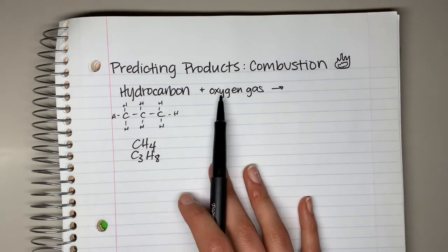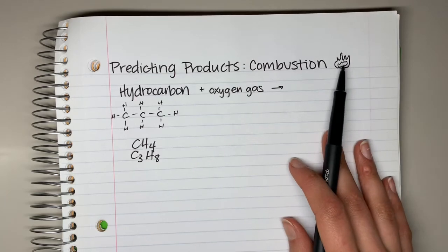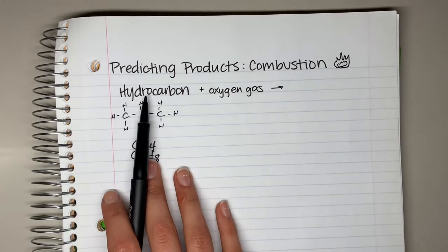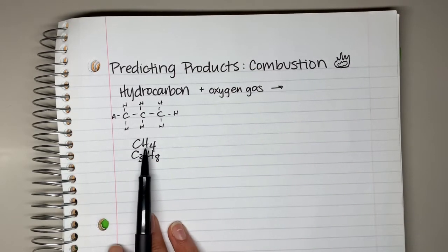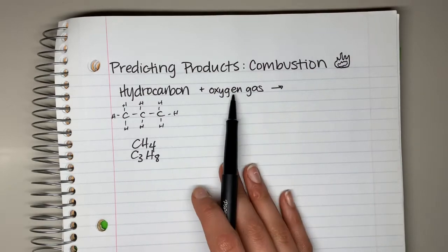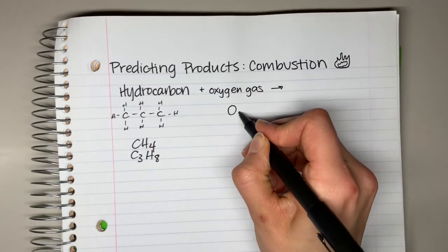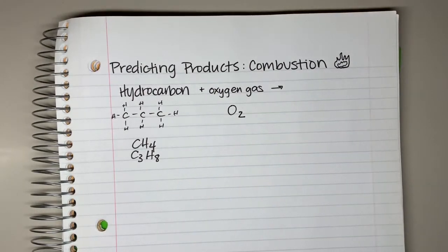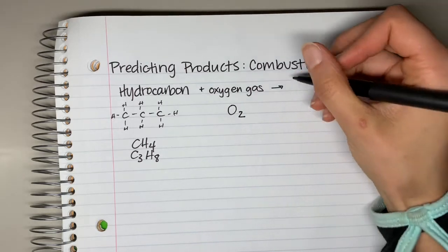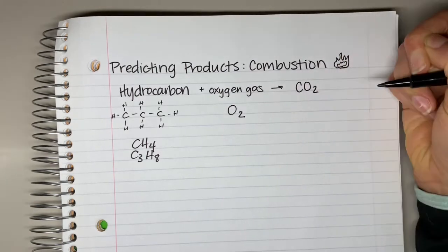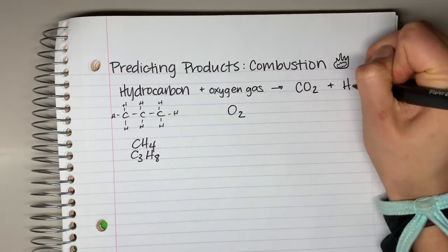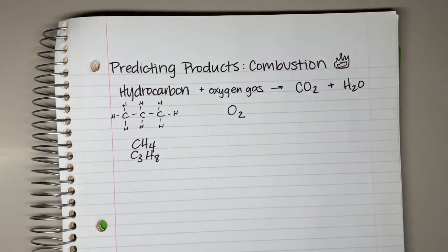As soon as the oxygen runs out, so does the flame. So we are going to have a hydrocarbon, like methane or propane, reacting with oxygen gas, which is O2. There are very specific products for a combustion reaction — every single combustion reaction has the same exact products. It is going to form carbon dioxide and water every time.